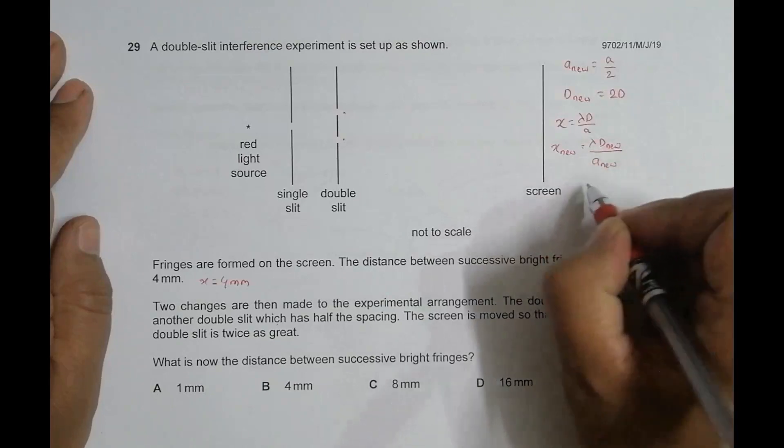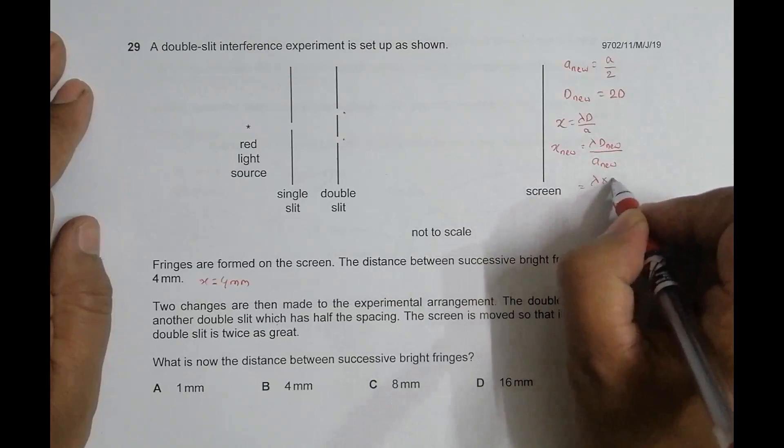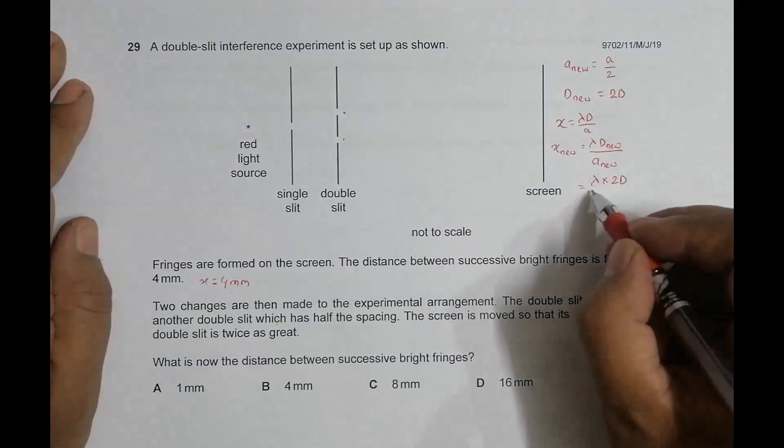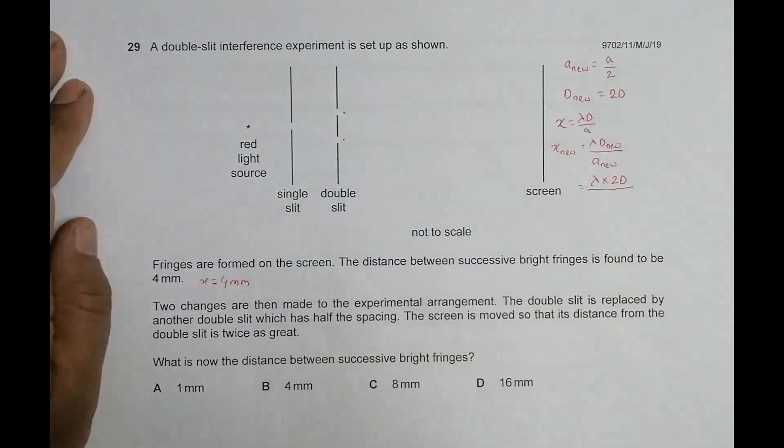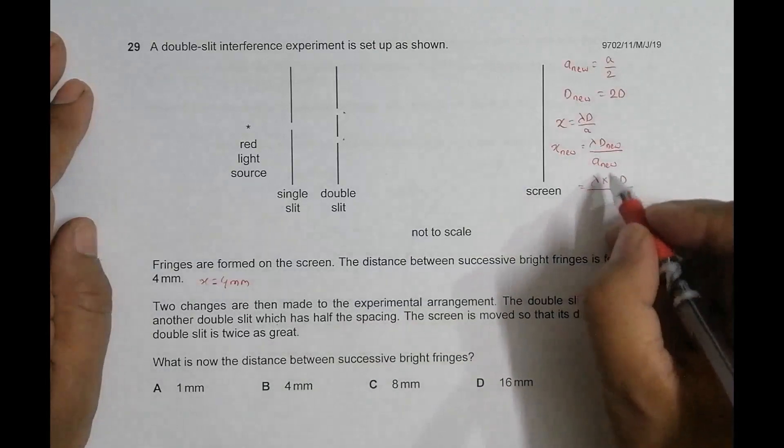So this will give us lambda into 2D divided by a_new, which is a by 2.